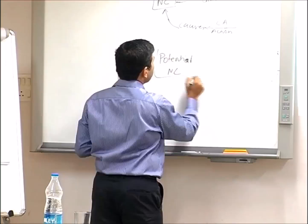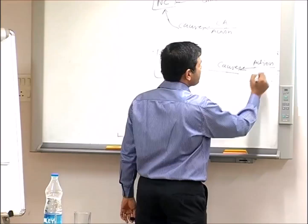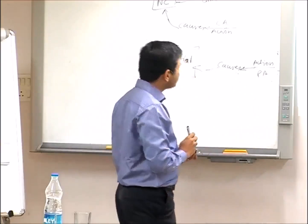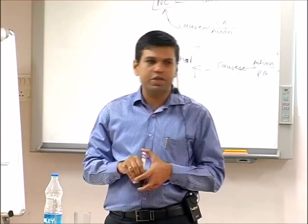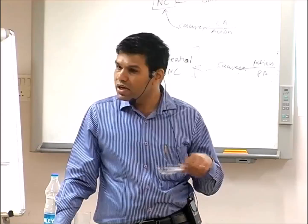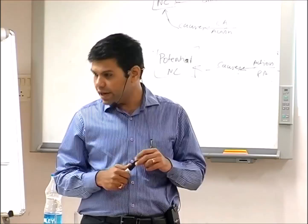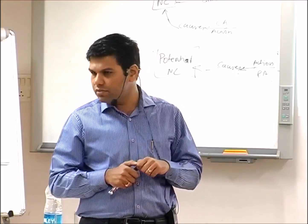There is potential non-conformity. You have potential non-conformity, causes of potential non-conformity, and you take action on those causes — that is preventive action. You take action on the causes of the potential non-conformity to avoid occurrence. Whereas corrective action is to avoid reoccurrence — that is the basic difference. If a customer complaint comes and you implement poka-yoke, it is a corrective action. But before the problem, if you anticipate and take action, then it is a preventive action.